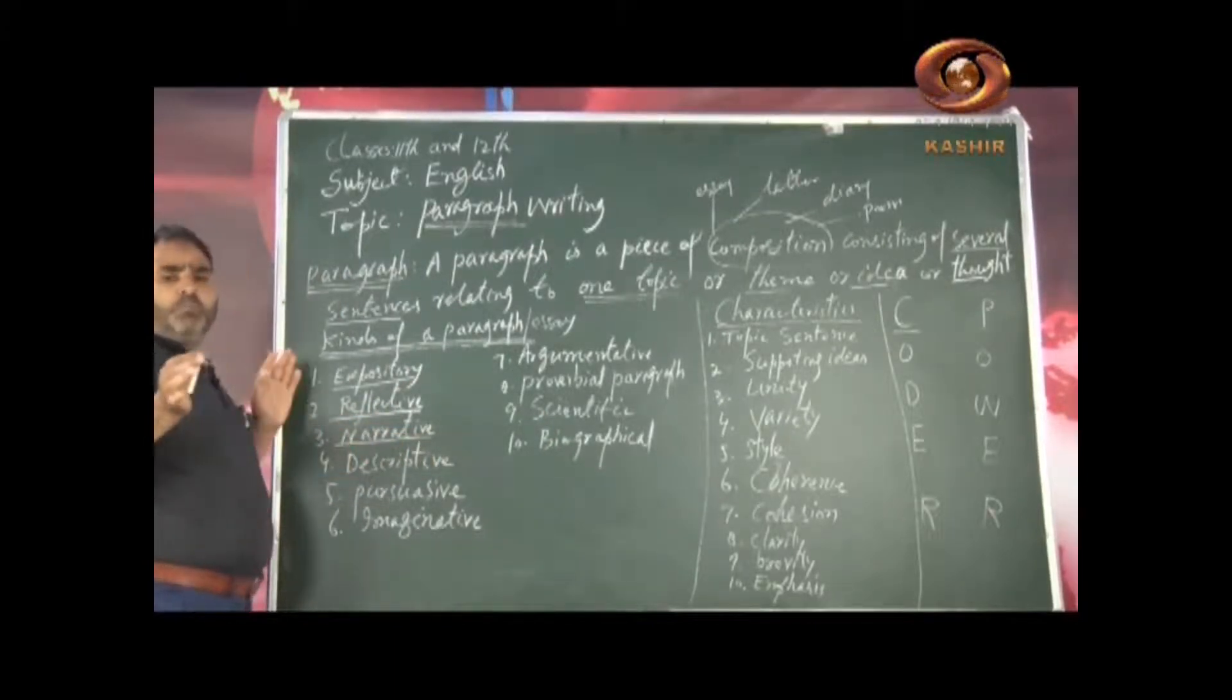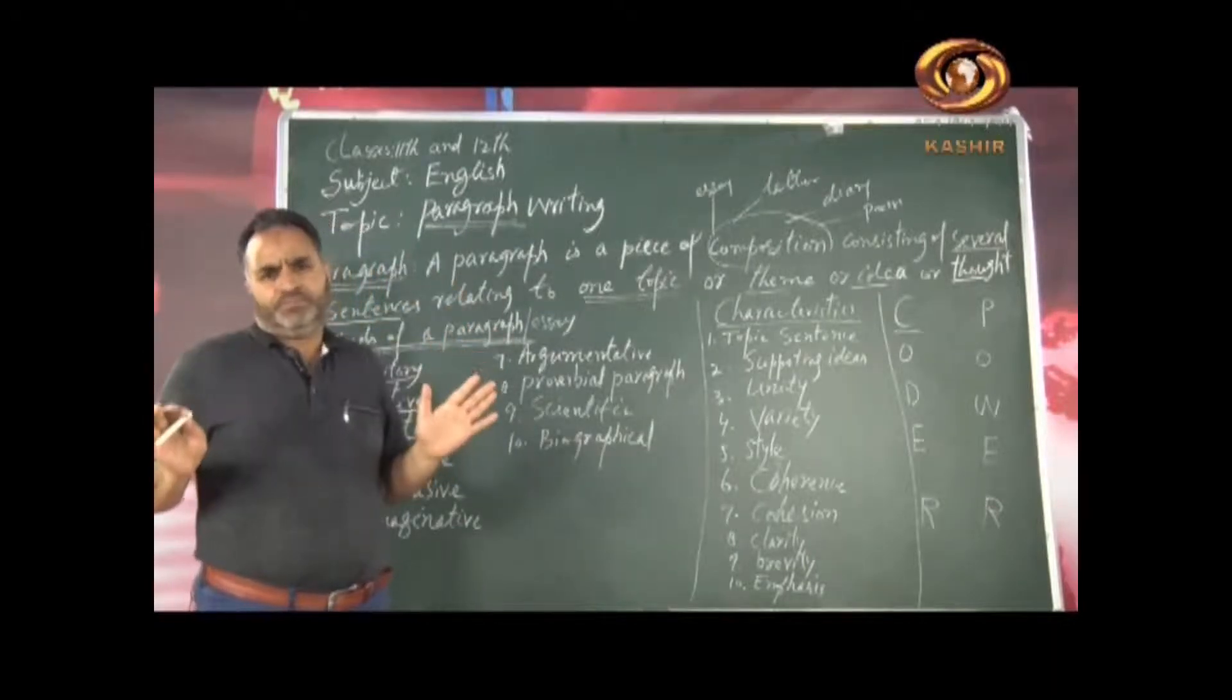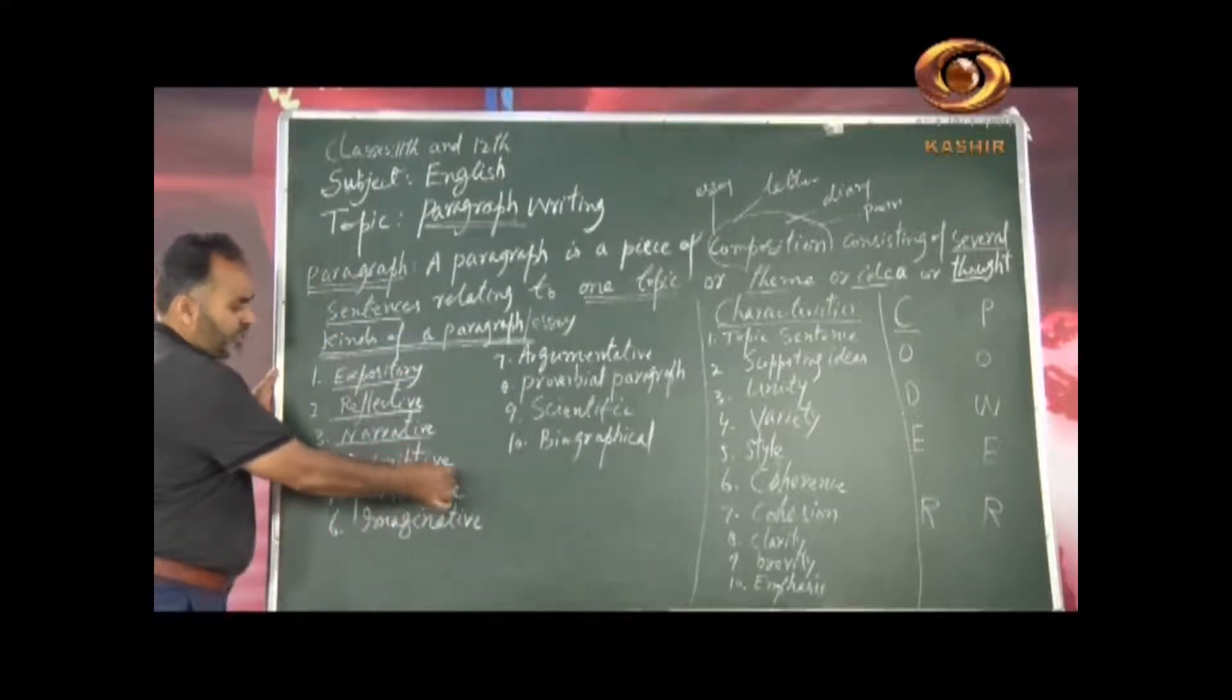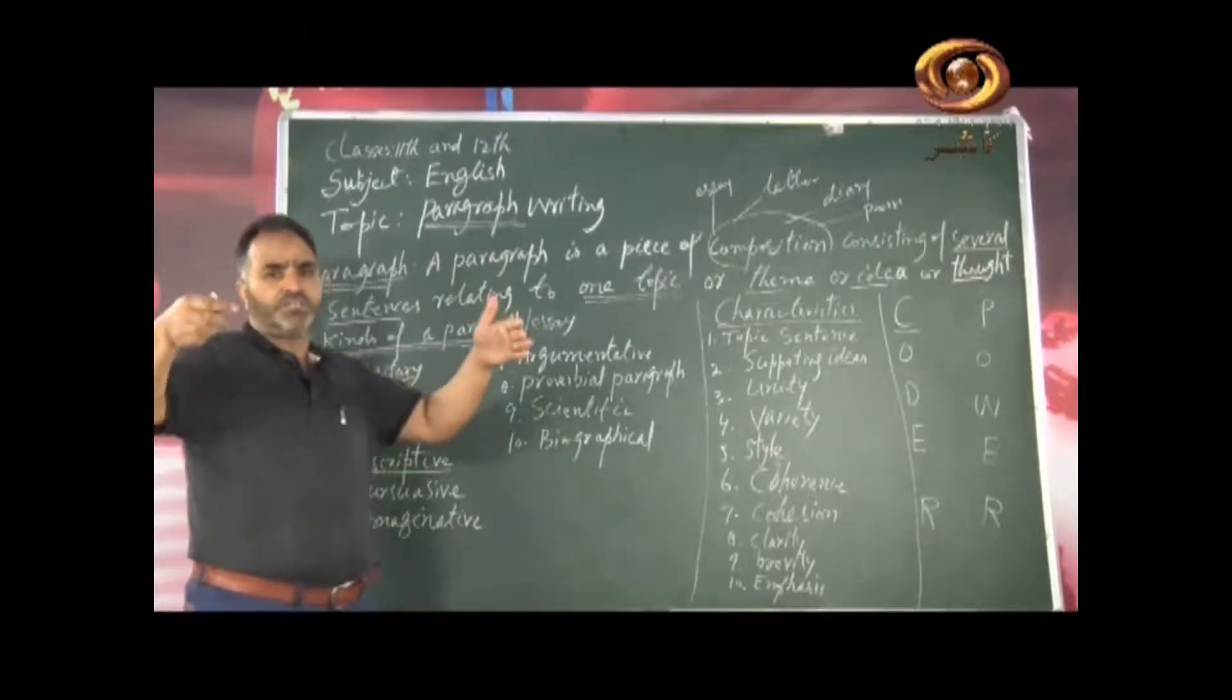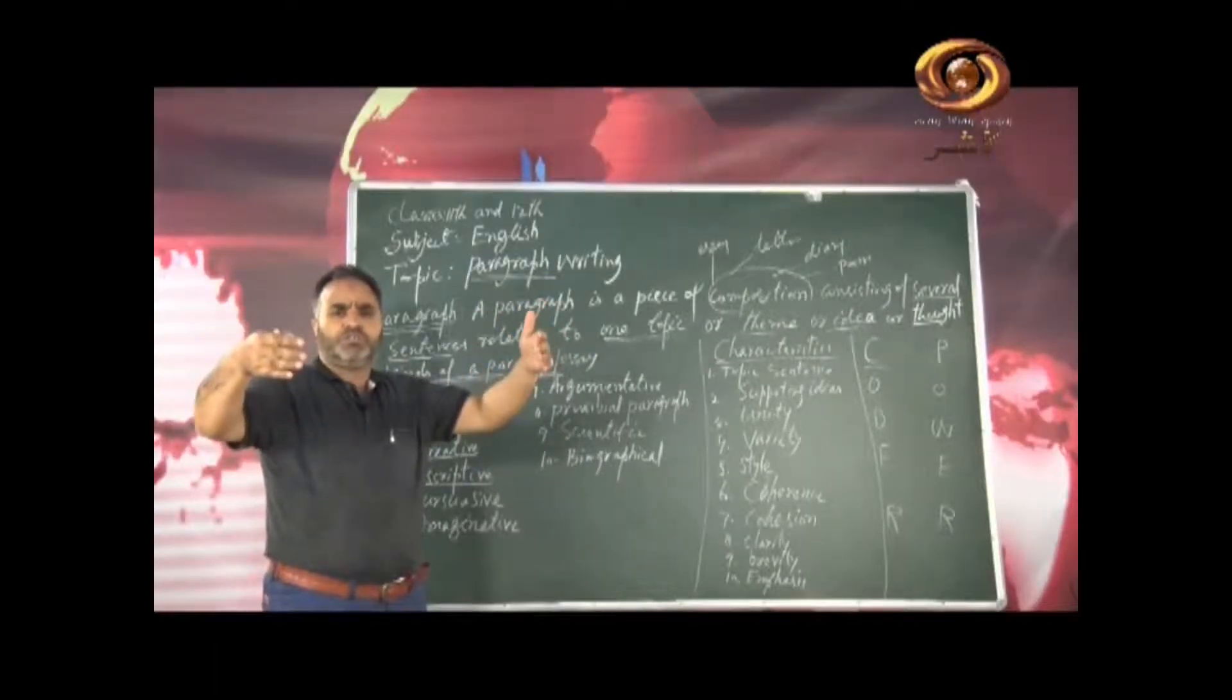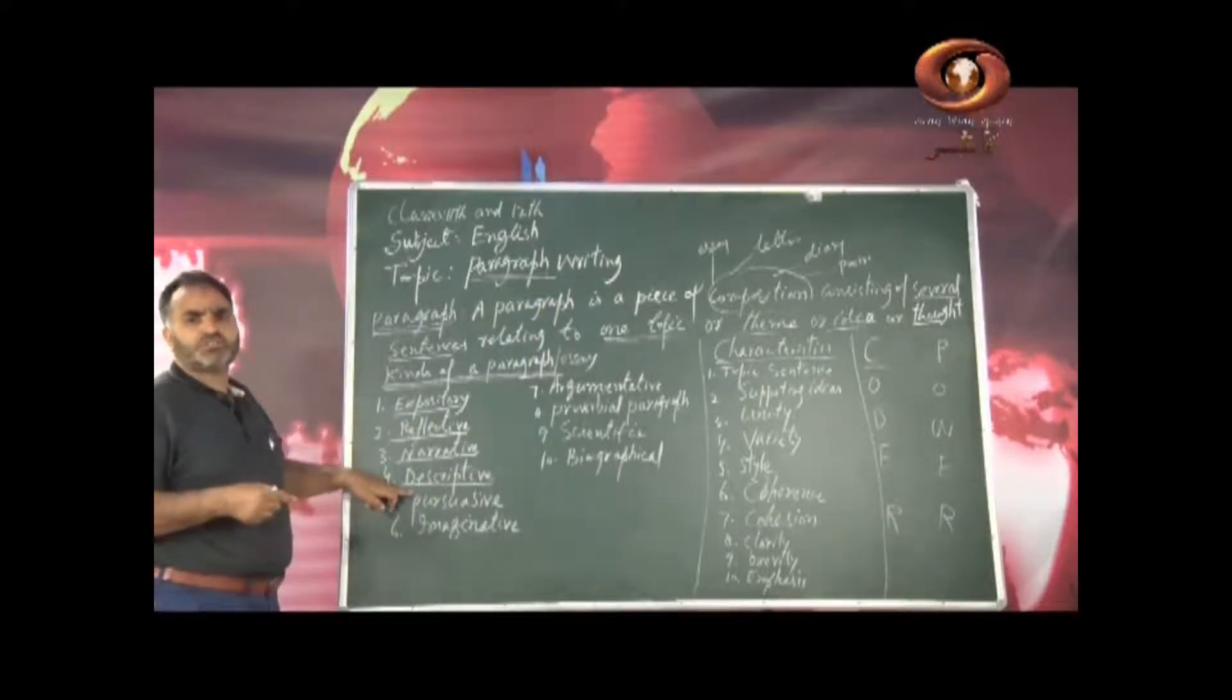And then narrative. It is a type of paragraph in which you tell a story like the reader wants to know what happened next. It is a stereotype. And then descriptive. You describe some person, you describe some place, your village, your home, your moholla, your city, your teacher, your father, mother, friend. So it is called descriptive.